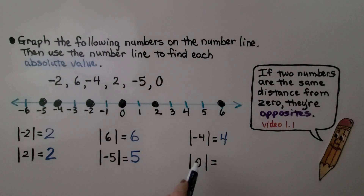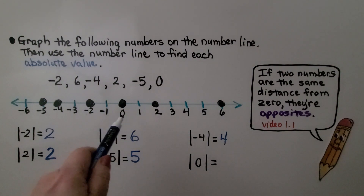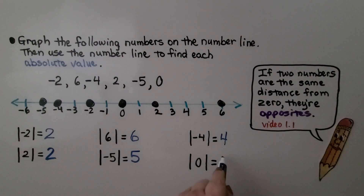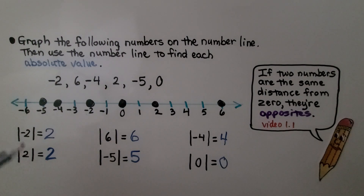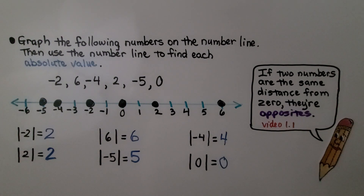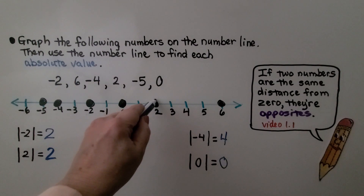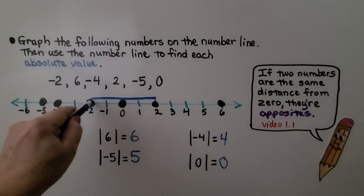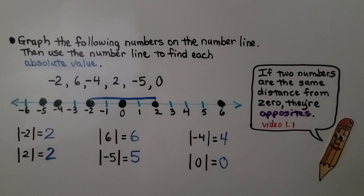How many jumps from zero is zero? The absolute value of zero is zero — we need zero jumps to get to zero. And if two numbers are the same distance from zero, they're opposites. We learned that opposites are the same distance from zero, so negative two and two are opposites — as covered back in video 1.1.